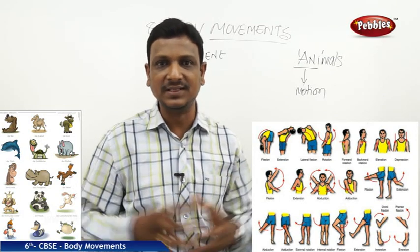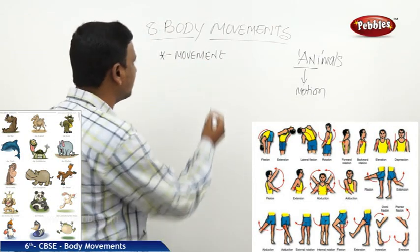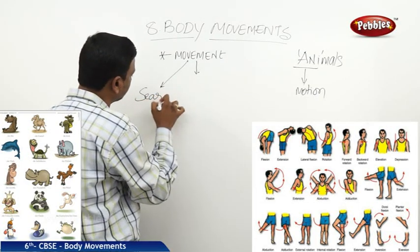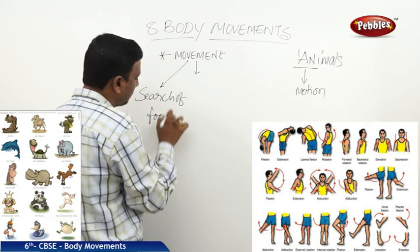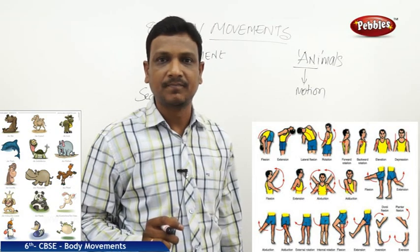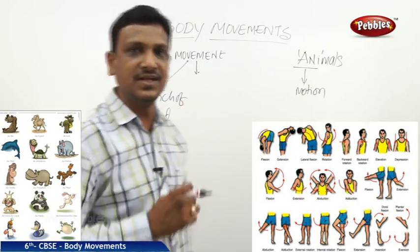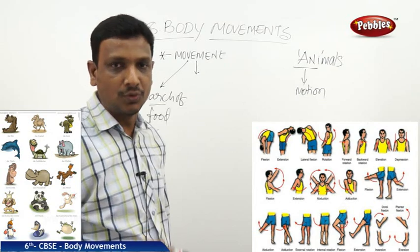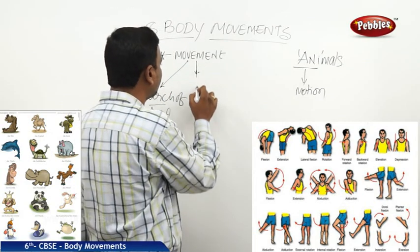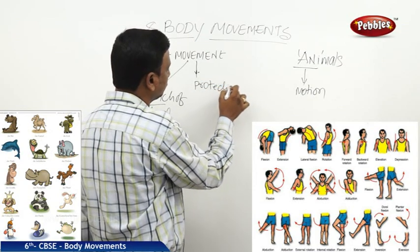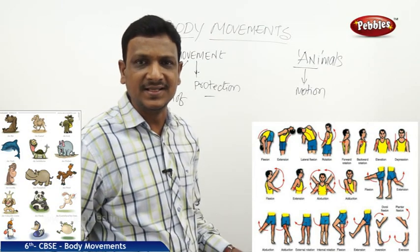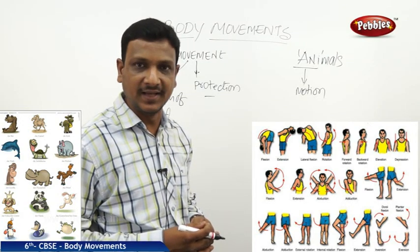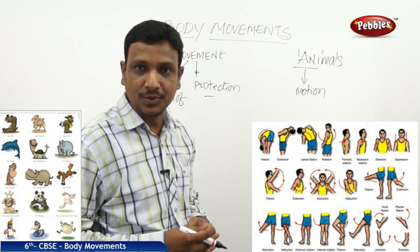So how do movements help the animals? Movements help animals to search for their food. The first and most important function — the necessity of movement — is searching for food. Animals move from place to place in search of their food, so for that they need movement. The second thing is for protection.